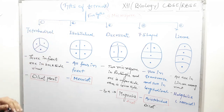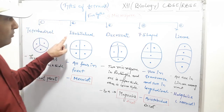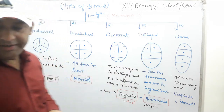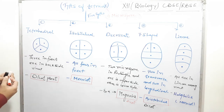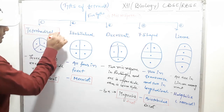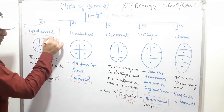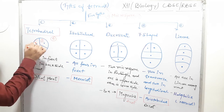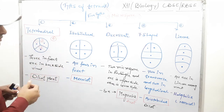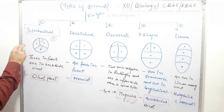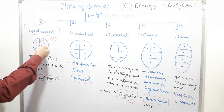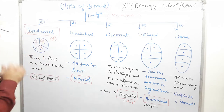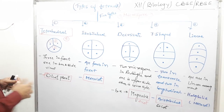There are five types of tetrads. First is tetrahedral, second is isobilateral, third is decussate, fourth is T-shaped, and fifth is linear. In the tetrahedral type, the four microspores are arranged such that three microspores are in the front region and one microspore is in the back region when we visualize the pollen grain. This condition is called tetrahedral type of tetrad. It is generally present in most dicot plants.